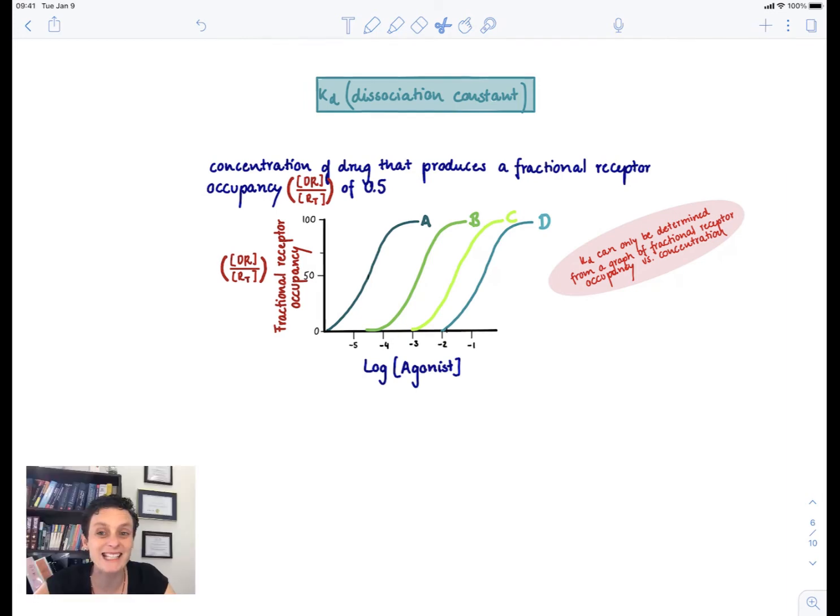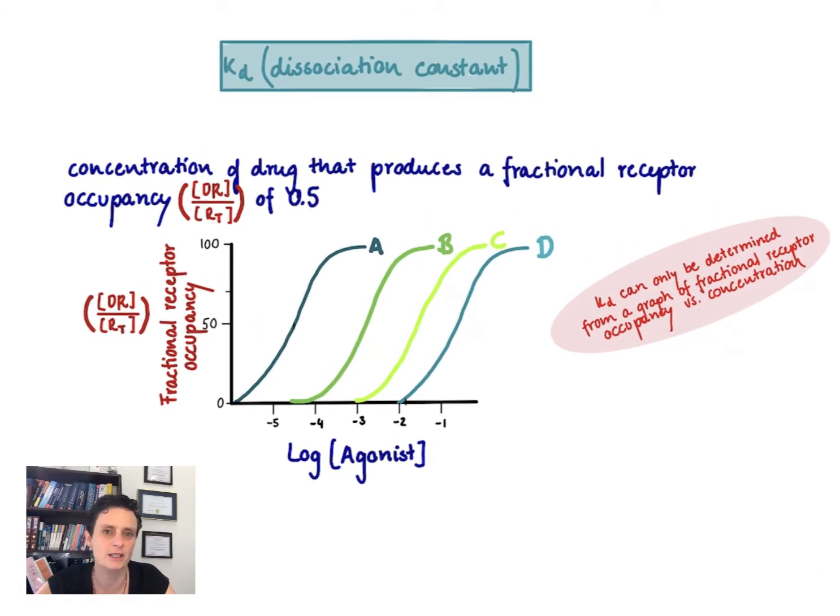In this video I want to talk about KD, the dissociation constant. This is a number that tells us a little bit about the affinity of the drug. It's a concentration that produces a fractional receptor occupancy of 0.5.